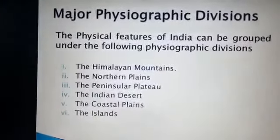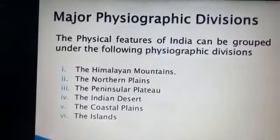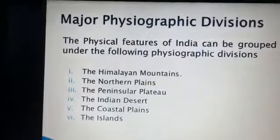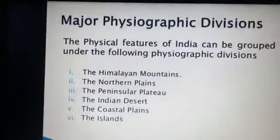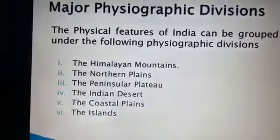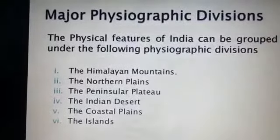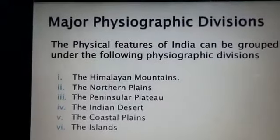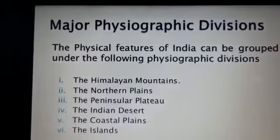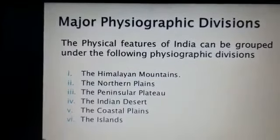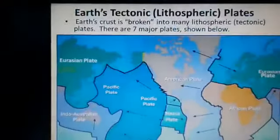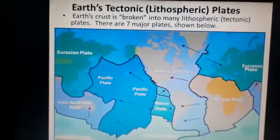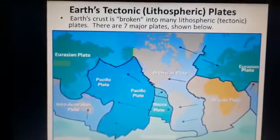The convectional currents split the crust into a number of pieces, leading to the drifting of the Indo-Australian plate after being separated from Gondwana Land towards the north. The northward drift resulted in the collision of the plate with the much larger Eurasian plate. Due to this collision, the sedimentary rocks which were accumulated in the geosyncline known as Tethys were folded to form the mountain system of Western Asia and the Himalayas.